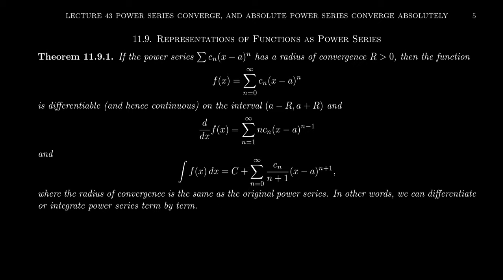The answer is going to be yes. If we have a power series — the sum of c_n times (x minus a) to the n, with coefficient sequence c_n and center a — and suppose we know the radius of convergence is a positive number (finite or infinite, but not zero), then a power series is in fact differentiable. Since it's differentiable, it's also continuous. It'll be differentiable on its interval of convergence, (a minus r) to (a plus r).